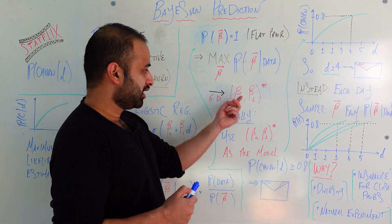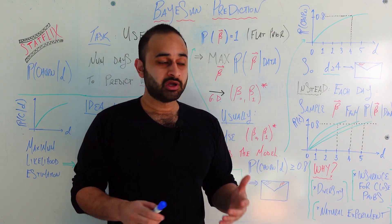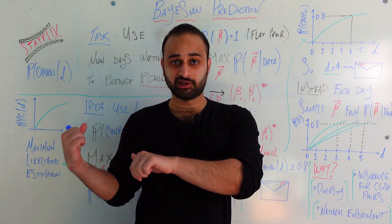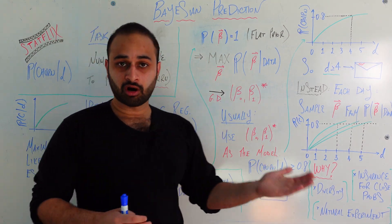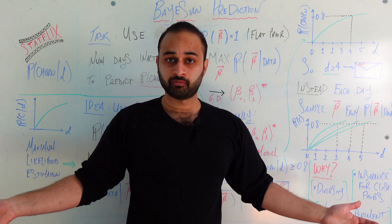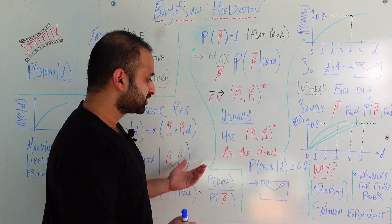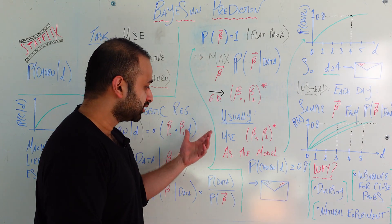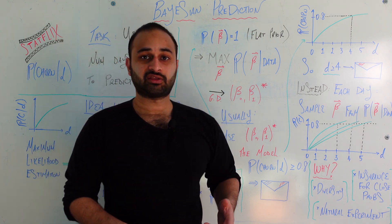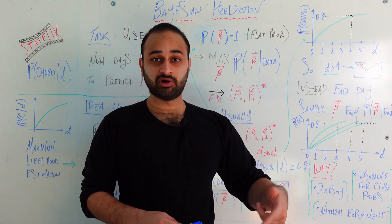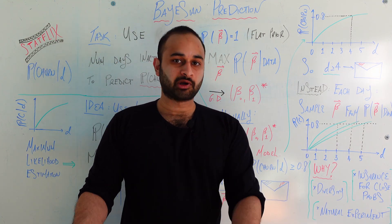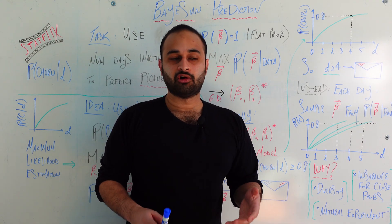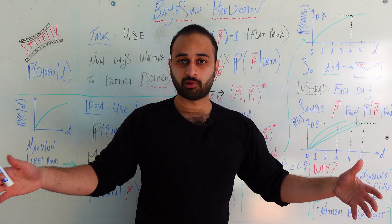And so now is where the divergence comes, between what we would do typically in order to make predictions versus thinking about predictions in a more Bayesian way. Let's talk about the typical case first. At this point, we have a model. We have some beta naught and beta one which are chosen in some kind of intelligent way. So the typical thing we would do is just plug those beta naught beta one into the logistic regression form, and use that as the model for the foreseeable future.